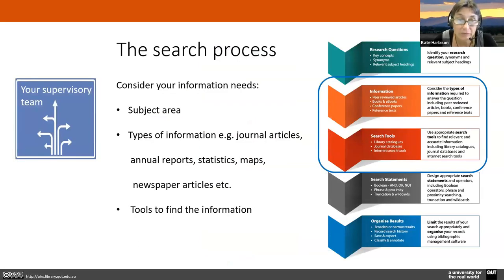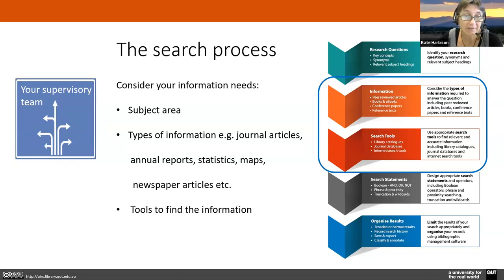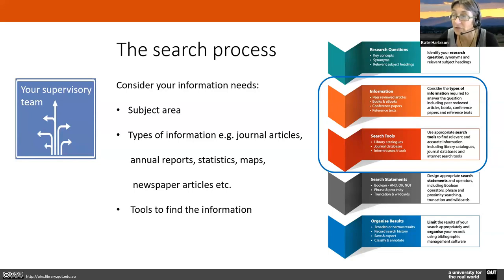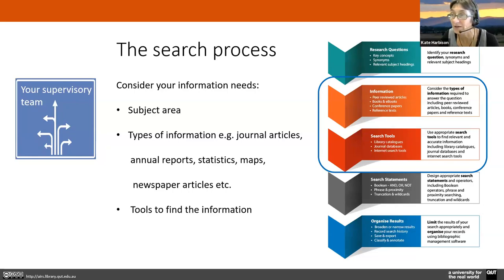The literature review for your thesis is a much more extensive study of the literature, and your searches need to be comprehensive. You need to understand where you will start searching and where you will do your searching. I really would suggest you have a chat to your supervisory team. Although your liaison librarians can help you with information from our point of view, quite often the supervisor will have very strong ideas about what is relevant to your research and where it would be a good idea to search, particularly if you're transdisciplinary.